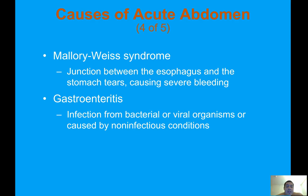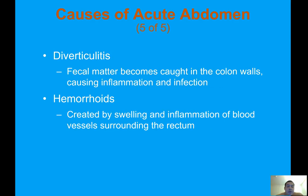Mallory-Weiss syndrome is a tear at the junction between the esophagus and the stomach, causing severe bleeding. Gastroenteritis is an infection from bacterial or viral organisms or caused by non-infectious conditions. Diverticulitis occurs when fecal matter becomes caught in the colon walls, causing inflammation and infection. Hemorrhoids are created by swelling and inflammation of blood vessels surrounding the rectum.